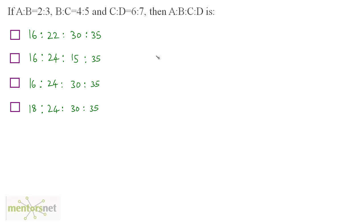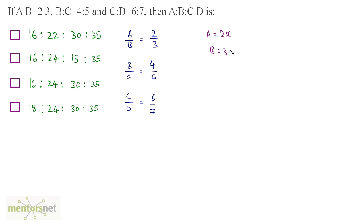If a is to b is 2 is to 3 and b is to c is 4 is to 5 and c is to d is 6 is to 7, then you have to find out a is to b is to c is to d. The ratios given are a by b which is 2 by 3, b by c which is 4 by 5, and c by d which is 6 by 7. Now, you can say that a is 2x and b is 3x, but b by c is 4 by 5, so now b is equal to 4x — but this is not possible. b cannot be 3x and 4x at the same time, so we are in a fix. What should you do now?